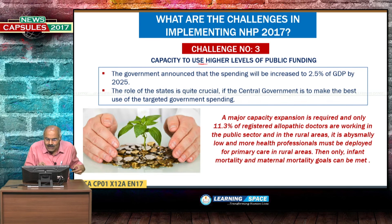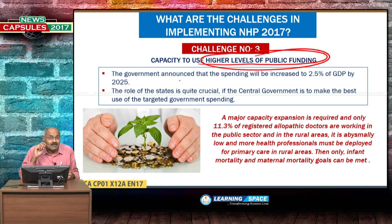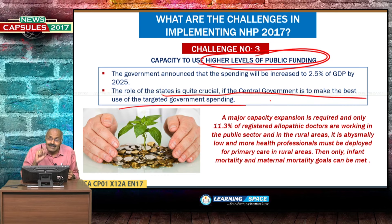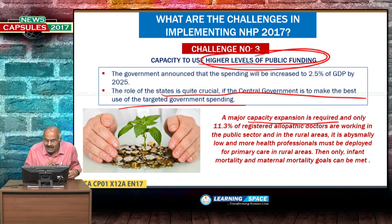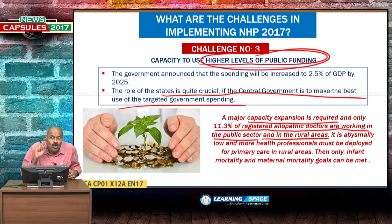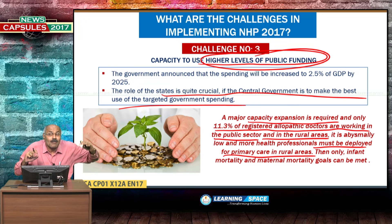Challenge number three is capacity to use higher levels of public funding. The government announced spending will increase to 2.5% of GDP by 2025, and the role of states is quite crucial — states must utilize this money for best use. A major capacity expansion is required: only 11.3% of registered allopathic doctors are working in public sector rural areas. More health professionals must be deployed for primary care in rural areas so that infant mortality, maternal mortality, and neonatal mortality can be substantially reduced.